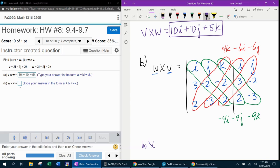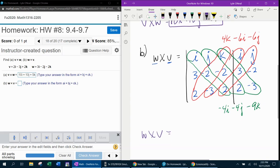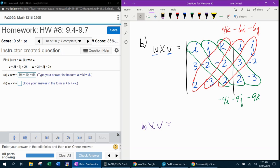And then W cross V, if I combine like terms, I've got negative 6I minus 4I, which is a negative 10I. I've got negative 6J minus 4J, which is a negative 10J. And I've got 4K minus 9K, which is a negative 5K.